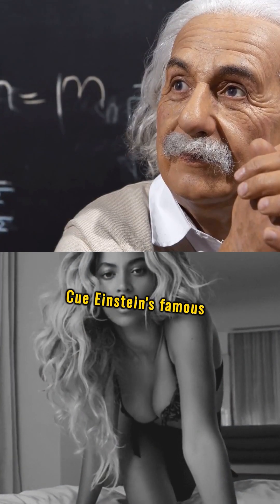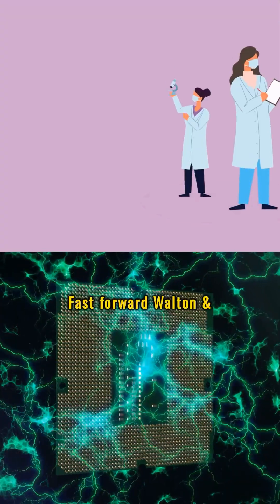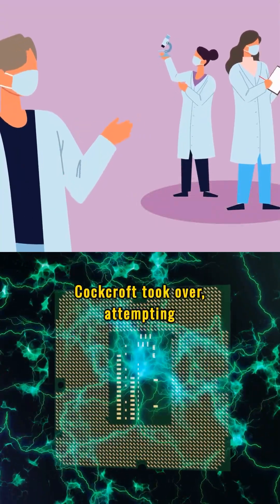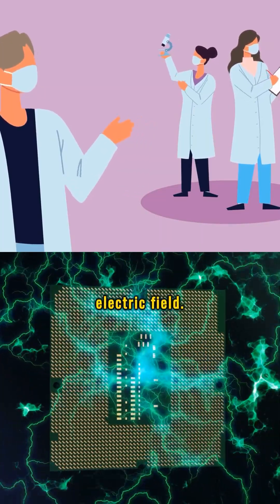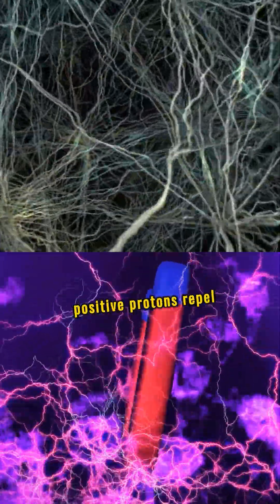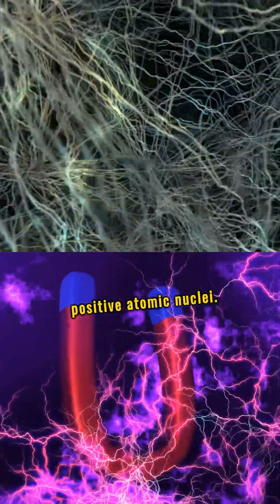Cue Einstein's famous equation, the guys like the Beyonce of physics. Fast forward, Walton and Cockroft took over, attempting to control the chaotic dance of radioactive decay with a giant electric field. But here's the subatomic hiccup: positive protons repel positive atomic nuclei.